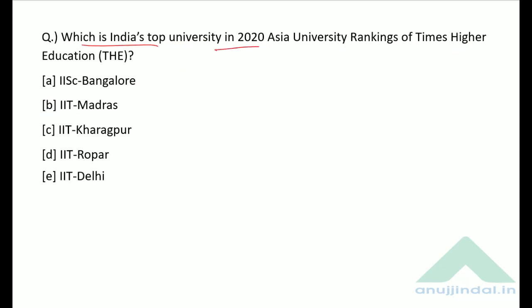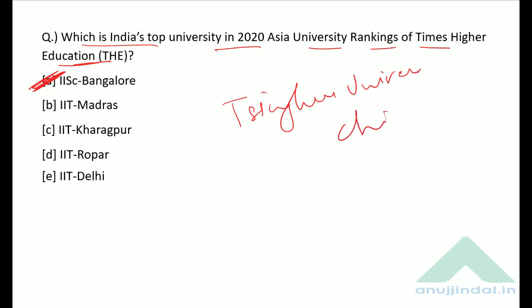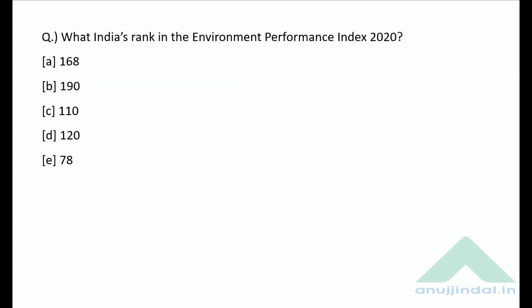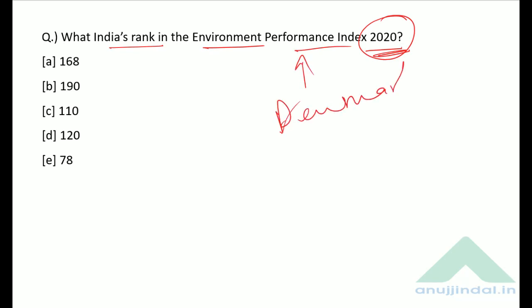Which is India's top university in the 2020 Asia University Rankings by Times Higher Education? From India, IISc Bangalore is at number one, ranked 36th overall. The overall number one is Tsinghua University from China. In the global Innovation Index 2020, India's rank is 48 and it is topped by Switzerland.